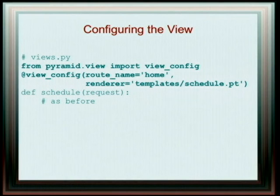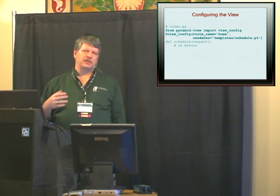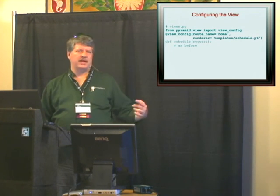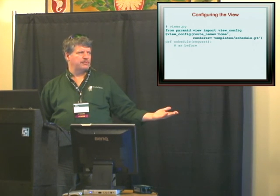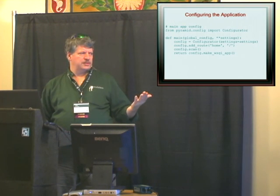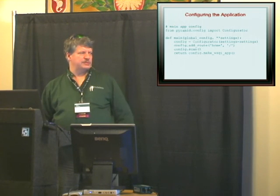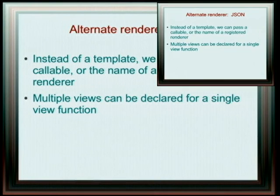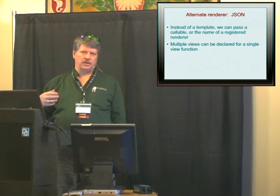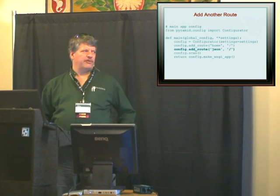What we've done to set this application up to return the web page is we took the function and wrapped it in a view_config decorator that tells Pyramid to use a renderer built from a template. You assign it to a route, which is the URL prefix you would use. You can also tell Pyramid that for some set of views, instead of using a renderer that returns HTML from a template, just return JSON. You can decorate the same function twice.